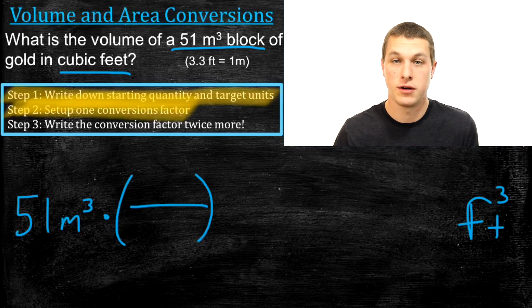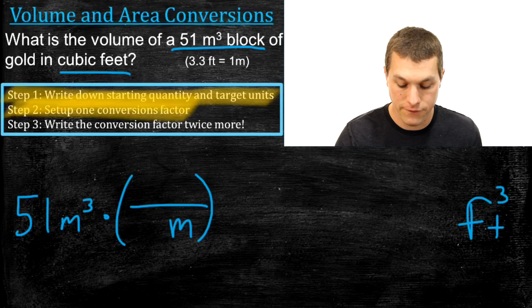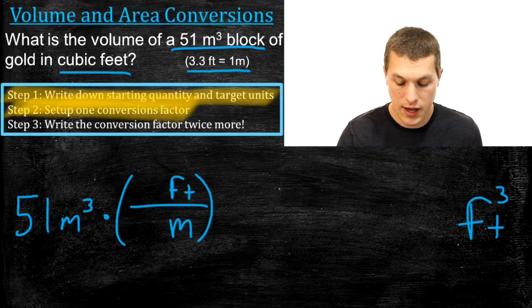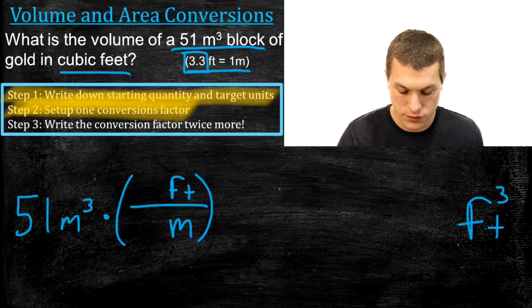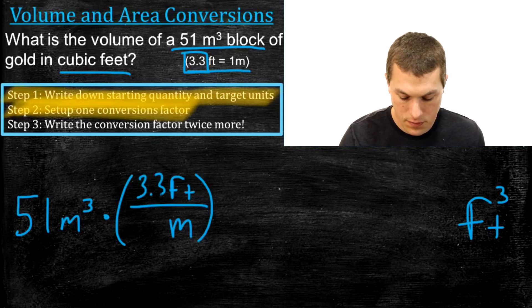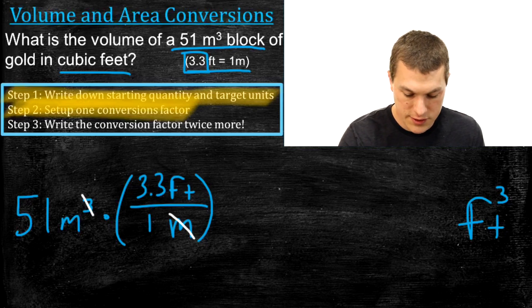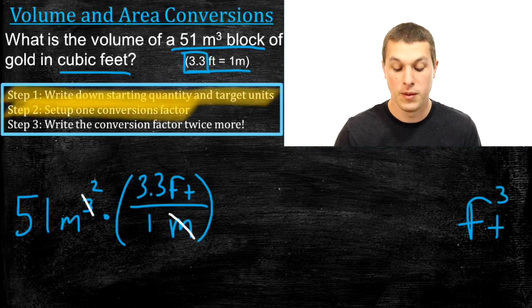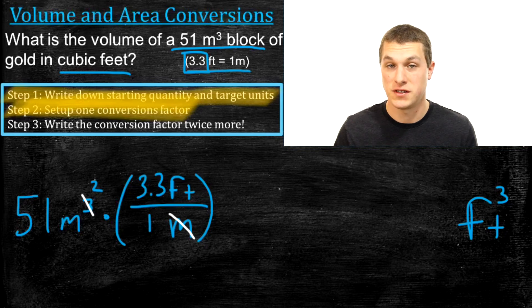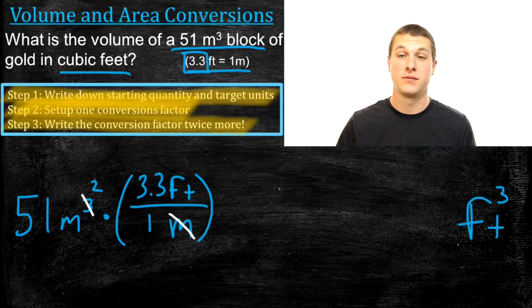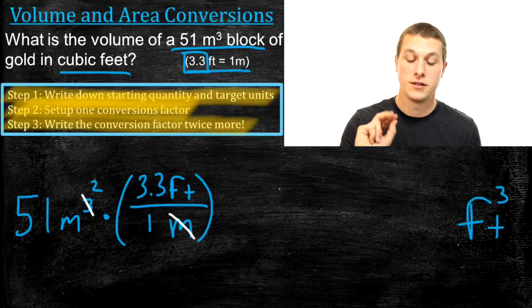Step two: set up one conversion factor from meters to feet. We write meters on the bottom to cancel it, and feet on top. Our equality tells us 3.3 feet equals one meter, so 3.3 goes next to the feet and 1 goes next to the meter. Notice that if we stopped there, we'd only cancel one meter — leaving meters squared instead of removing meters cubed entirely — so we're clearly not done.